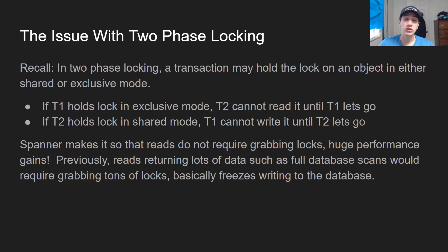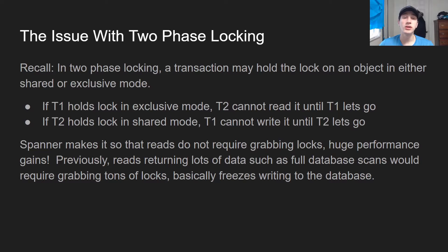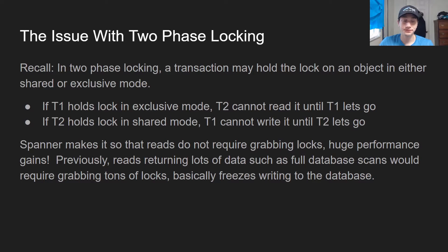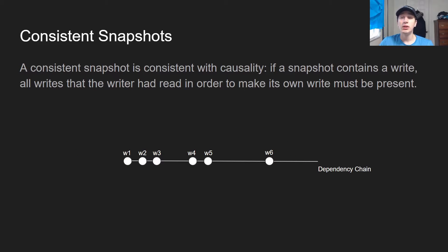What Spanner does is adjust the whole system so that reads don't require grabbing a ton of locks. This is really huge for doing things like backups, analytical queries, or anything requiring scanning over a ton of rows that takes a few minutes. If you're scanning a huge database table in a minute-long query, you're holding shared locks on pretty much every single row, which means you can't write to any row — creating a huge bottleneck. Being able to eliminate the need for locks on reads can seriously increase performance.